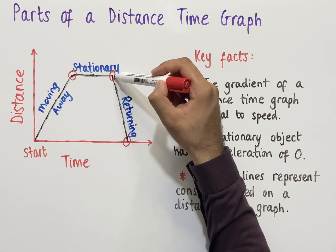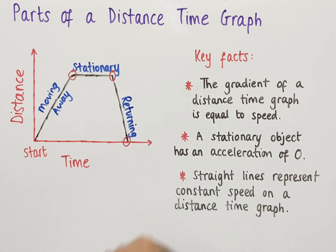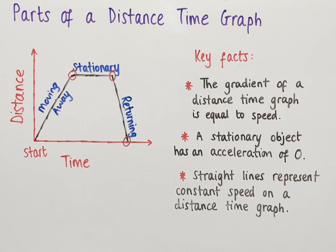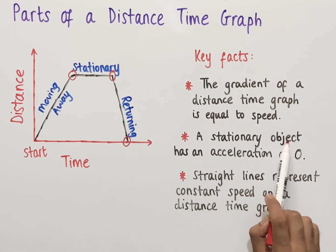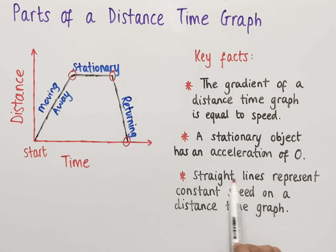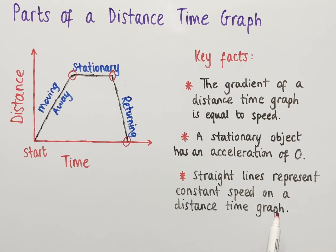If we work out the gradient of the final line, that value tells us the speed at which the object is returning back to the start. Another fact is that a stationary object has an acceleration of zero, meaning the object is neither speeding up nor slowing down. Finally, straight lines represent constant speed on a distance-time graph.